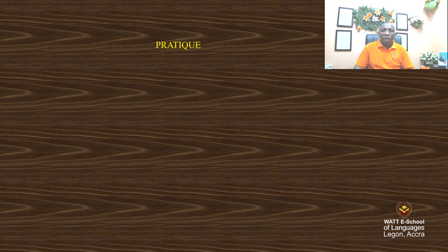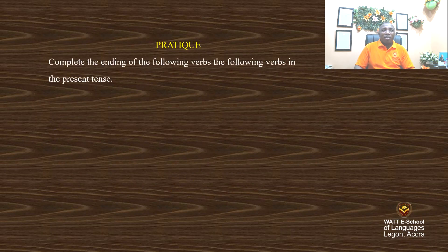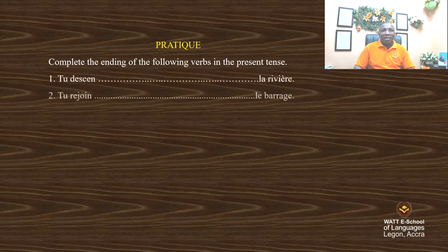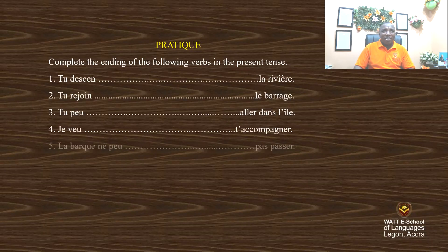Let's have a look at this practice activity. Complete the ending of the following verbs in the present tense. Let me display the sentences. We have five. Tu descends — descendre is an irregular verb.